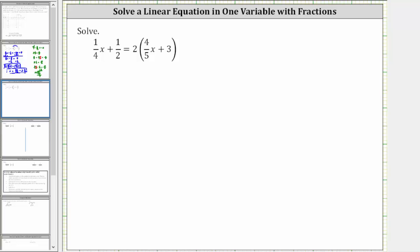We want to solve the given equation. For the first step, we clear the parentheses on the right side by distributing two. We have 1/4 x plus 1 1/2 equals distributing two, two times 4/5 x is equal to 8/5 x.